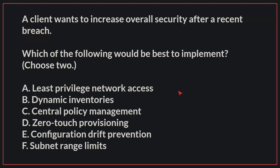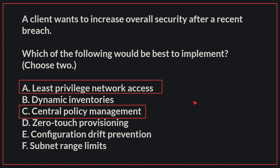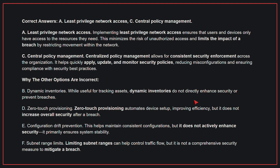A client wants to increase overall security after a recent breach. Which of the following would be best to implement? Choose two. The correct answers are A, Least Privileged Network Access, and C, Central Policy Management. Implementing Least Privileged Network Access ensures that users and devices only have access to the resources they need, minimizing the risk of unauthorized access and limiting the impact of a breach. Central Policy Management allows for consistent security enforcement across the organization, helping quickly apply, update, and monitor security policies, reducing misconfigurations and ensuring compliance with security best practices.